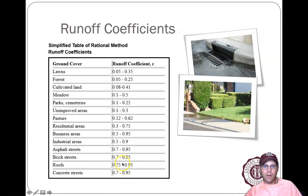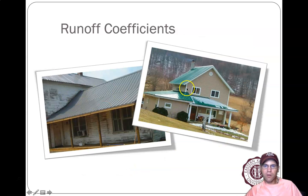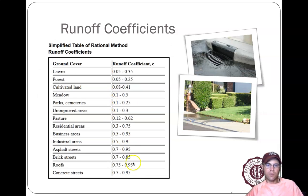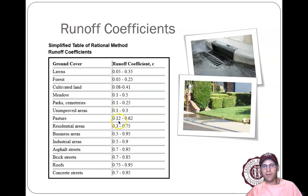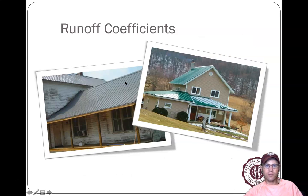Roofs — especially steel roofs — shed water very fast, with up to 95 percent runoff, while wood shingles or shakes absorb a bit more, dropping the low end to around 75 percent. Brick streets fall in a similar range. Lawns have very little runoff, and even lightly grazed, highly productive grassy pastures only see about 12 percent runoff. A heavily grazed, nearly barren pasture can have up to 62 percent runoff when it rains. Forest land has the lowest coefficients of all.